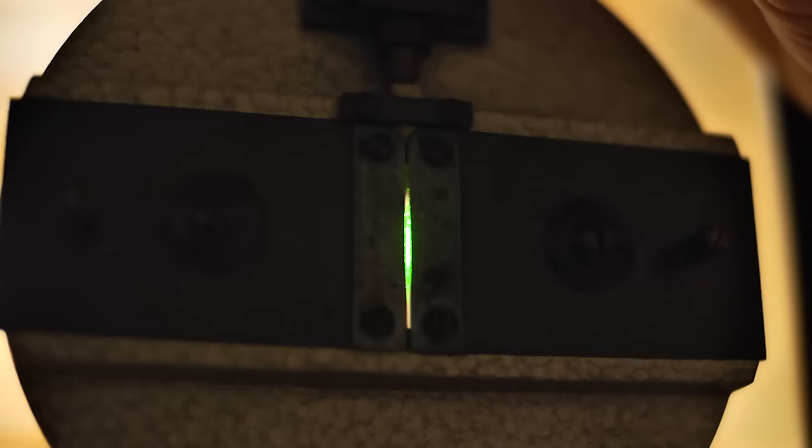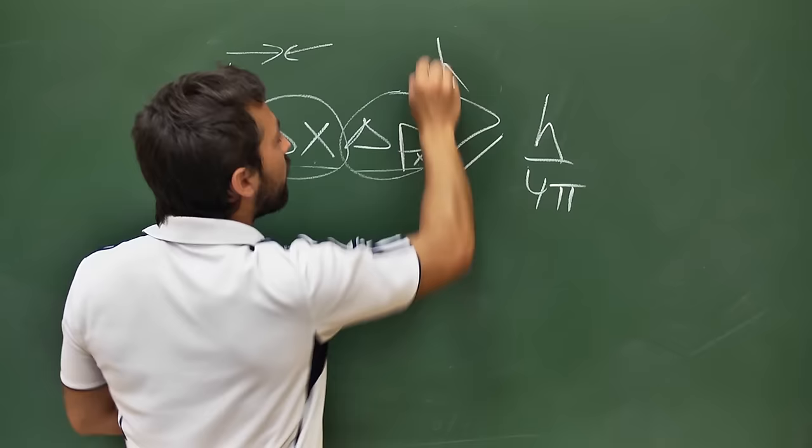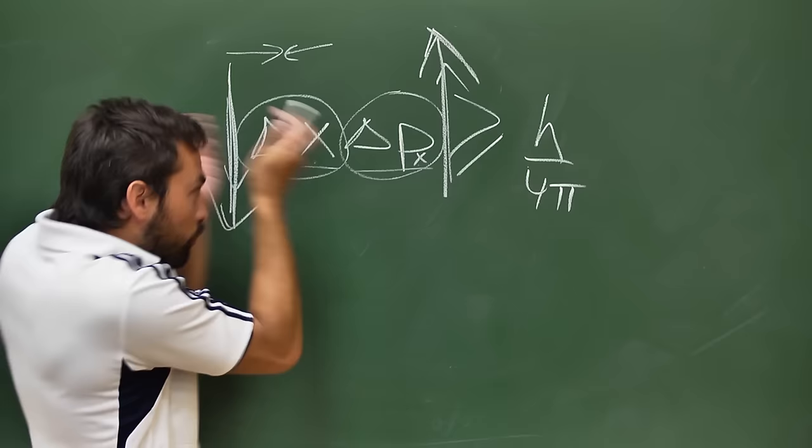And the more you decrease your uncertainty in position, the more narrow you make that slit, the more the uncertainty in momentum has to go up. And so if these photons are going to the left and the right, that's going to produce a much wider beam.